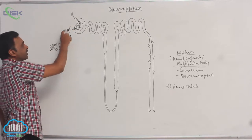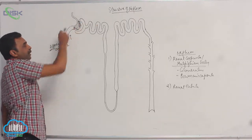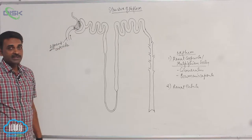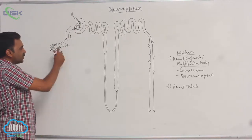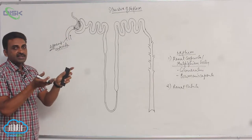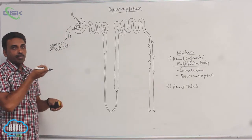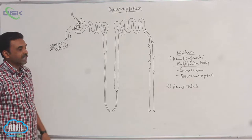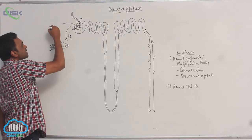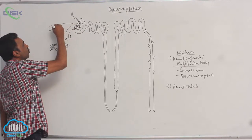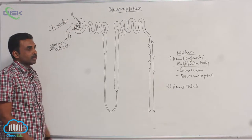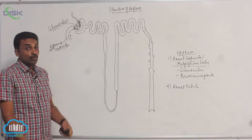After coming to the nephron, the afferent arteriole breaks down and forms a group of capillaries. This group of capillaries is called the glomerulus.